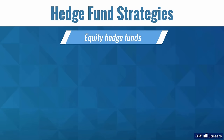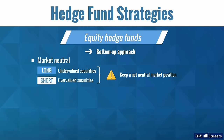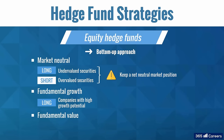Finally, we have equity hedge fund strategies that involve taking long and short positions in public equities and related derivatives. They differ from event-driven or macro strategies by using a bottom-up rather than a top-down approach. Market-neutral strategies focus on selecting undervalued securities to buy and overvalued ones to sell short, using quantitative, technical, or fundamental analysis. The overall goal is to keep a net-neutral market position and profit from individual securities movements. Fundamental growth strategies use fundamental analysis to identify and take long positions in companies with high growth potential. Fundamental value strategies take long positions in various undervalued companies, including non-high-growth firms.